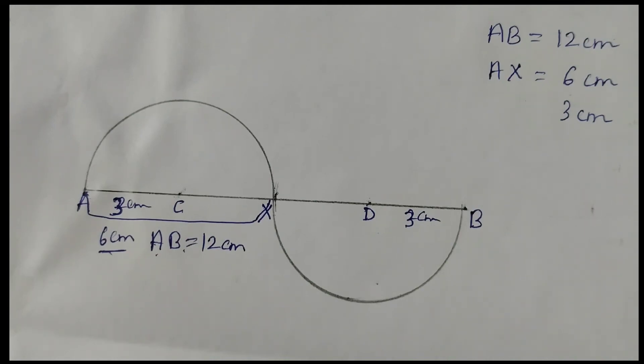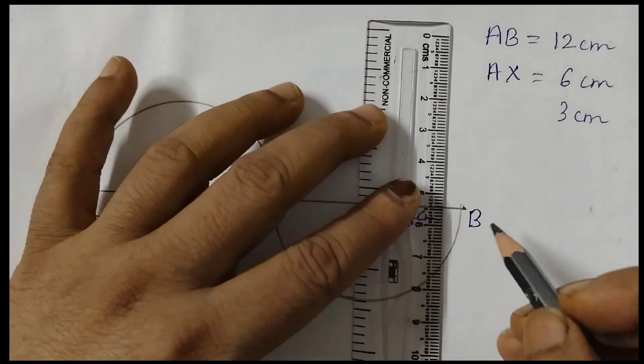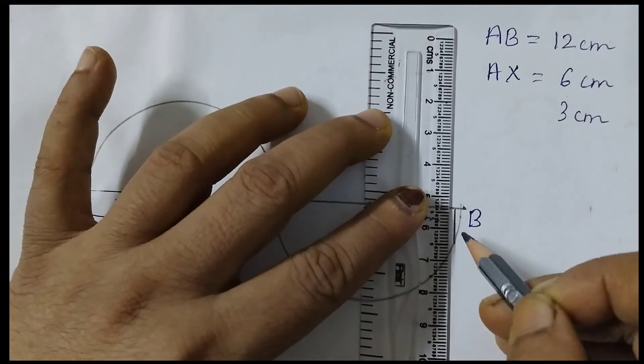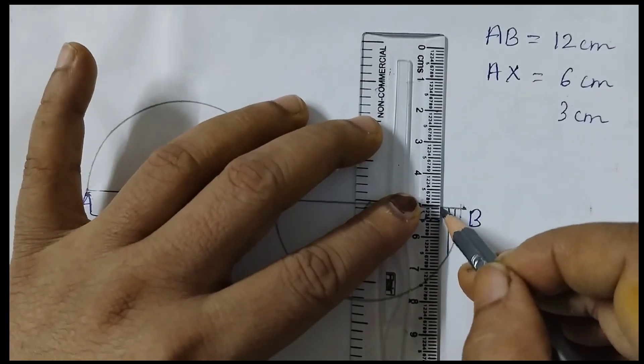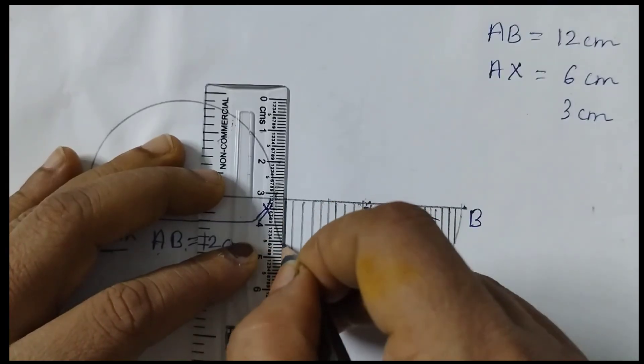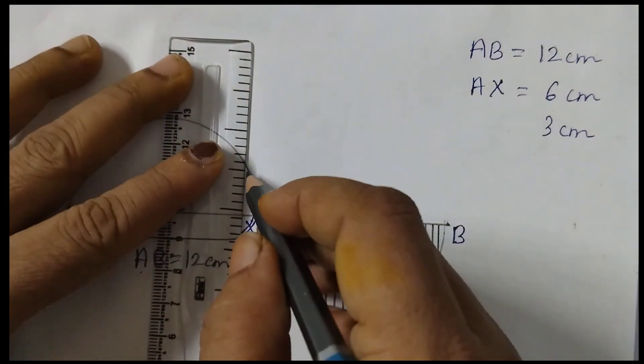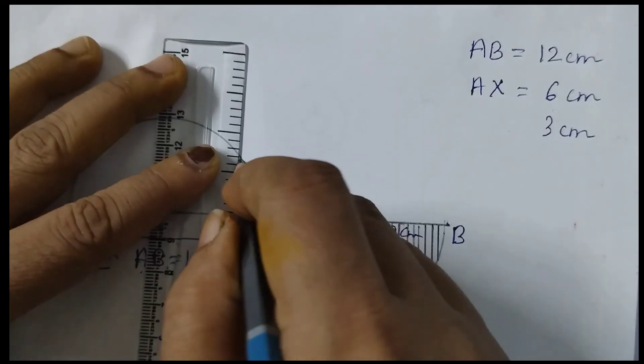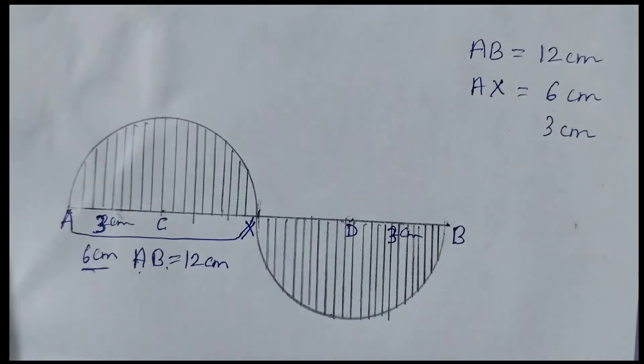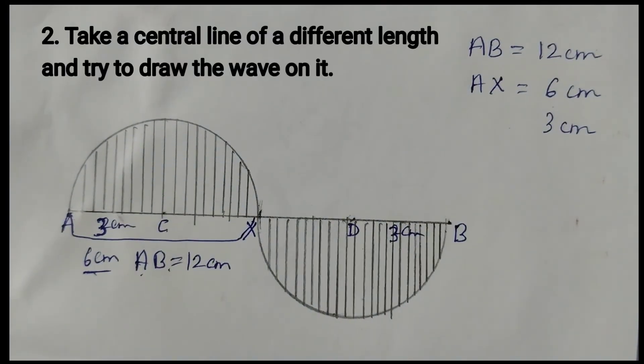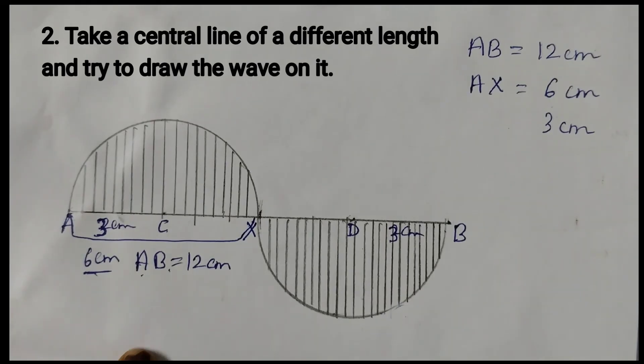I'll just complete the wavy wave by drawing the lines. So this part I have completed and now this one. Now this is done. This construction is complete now.